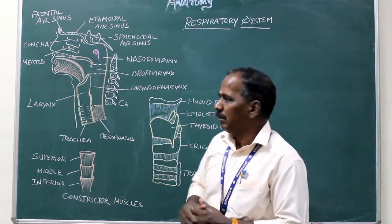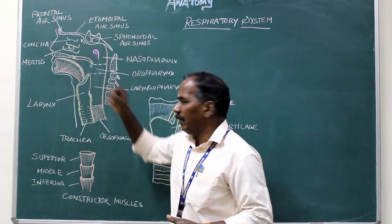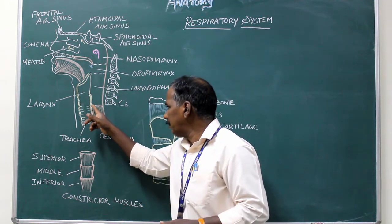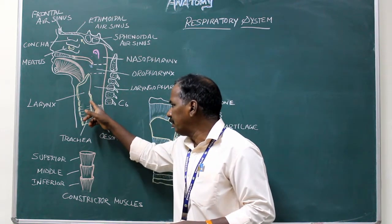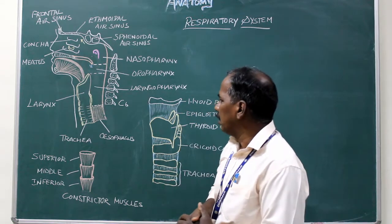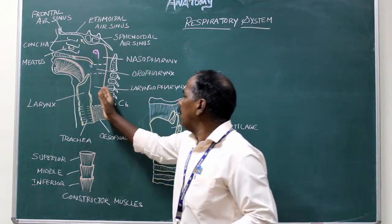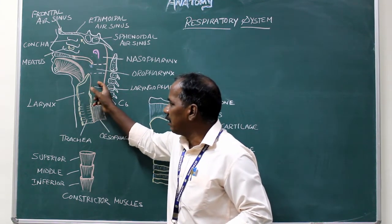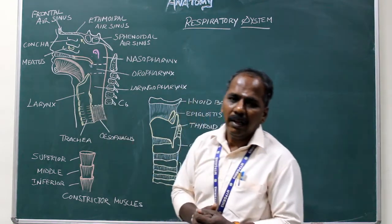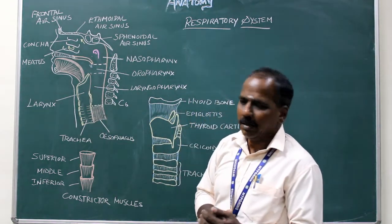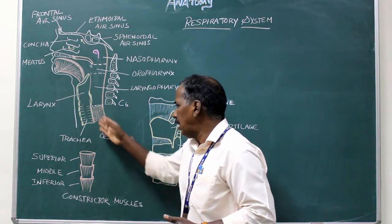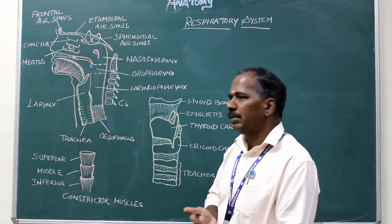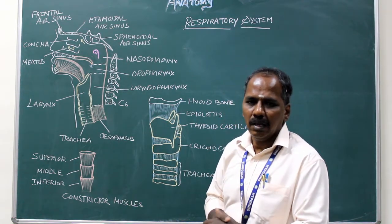Laryngopharynx: It extends from the upper end of the epiglottis to the lower border of C6 vertebra or the lower border of cricoid cartilage. Anteriorly, it communicates with the inlet of the larynx. Below, it continues as the esophagus.